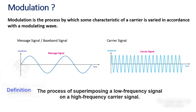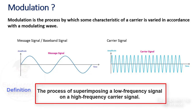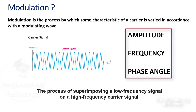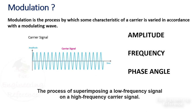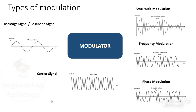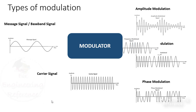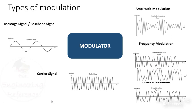Modulation can be defined as the process of superimposing a low-frequency signal on a high-frequency carrier signal. There are basically three types of modulation process. Depending on the changes in the amplitude, frequency, or the phase angle of the carrier wave, the modulation process is categorized as amplitude modulation, frequency modulation, and phase modulation.